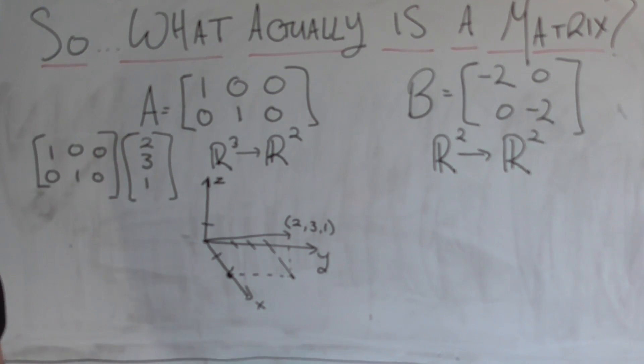If you remember your rules of matrix vector multiplication, we basically multiply one by the two, so we get two, plus zero by the three, we get zero, plus zero by the one, we get zero.